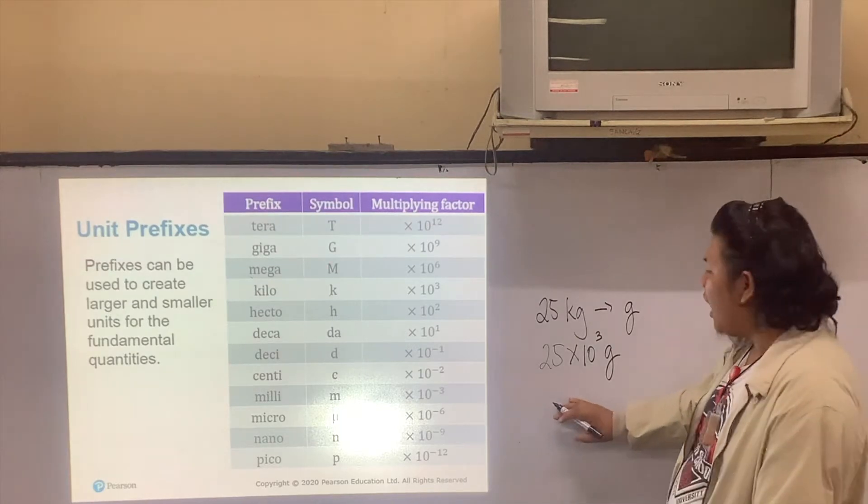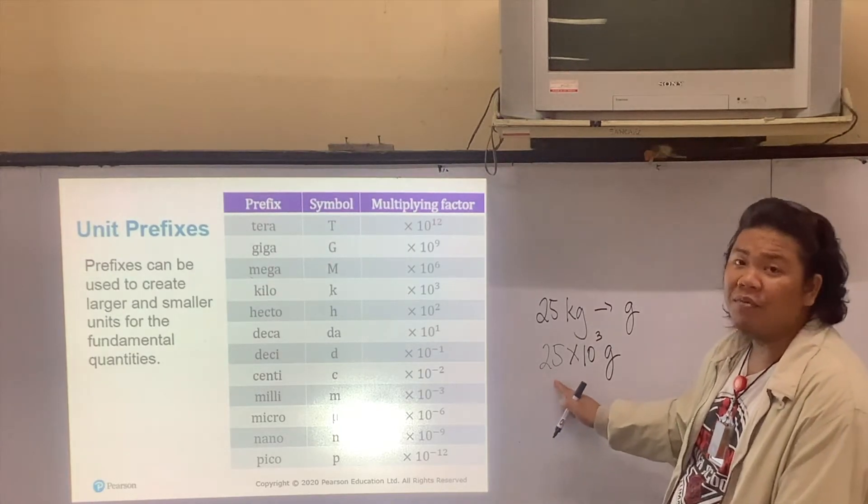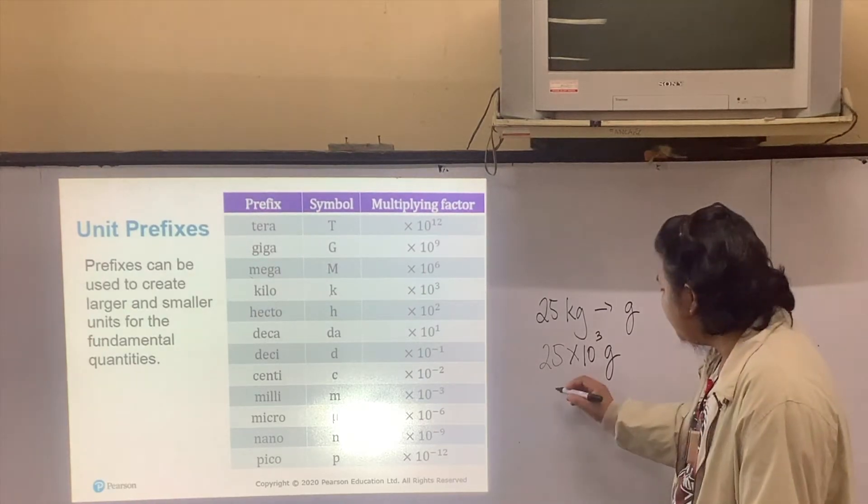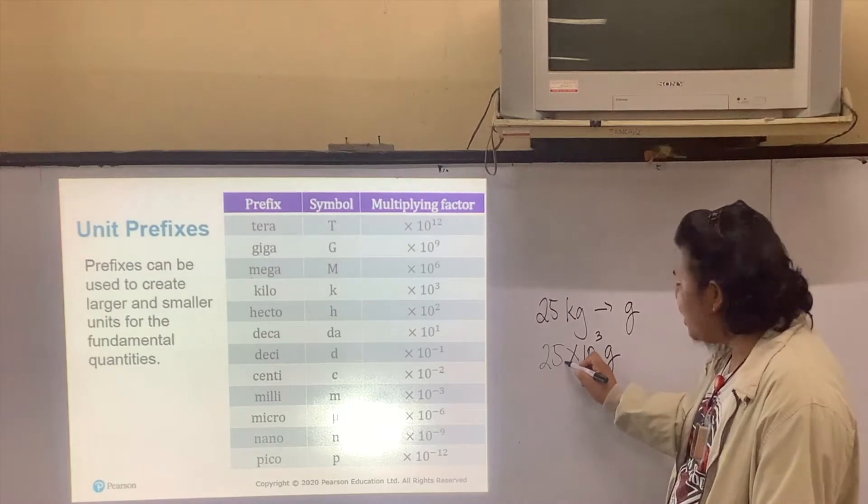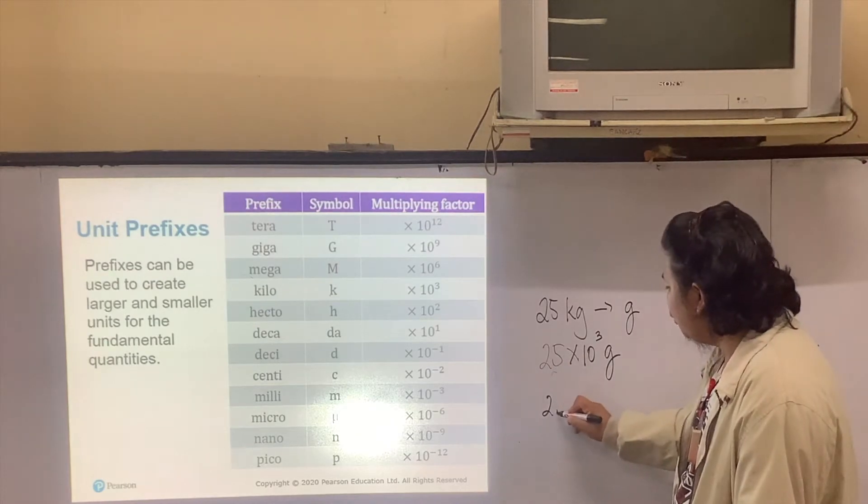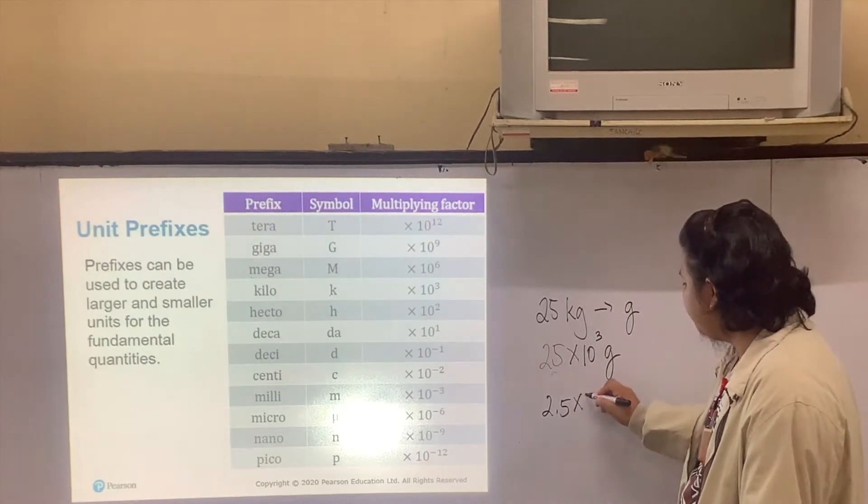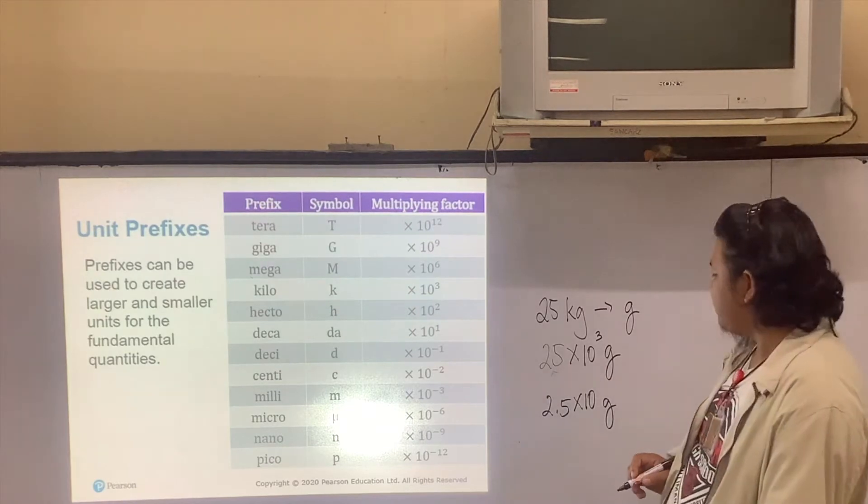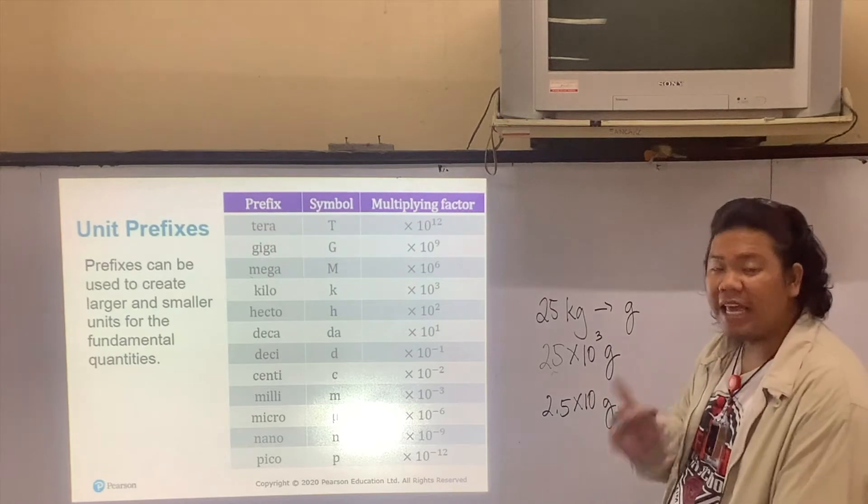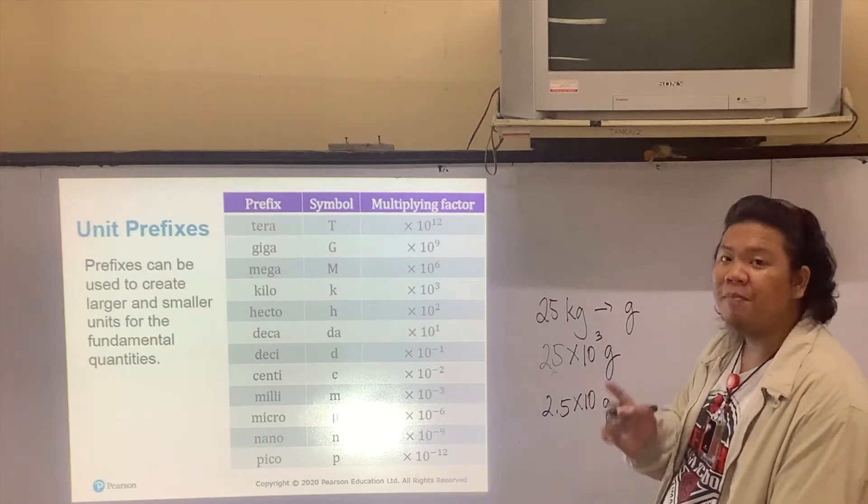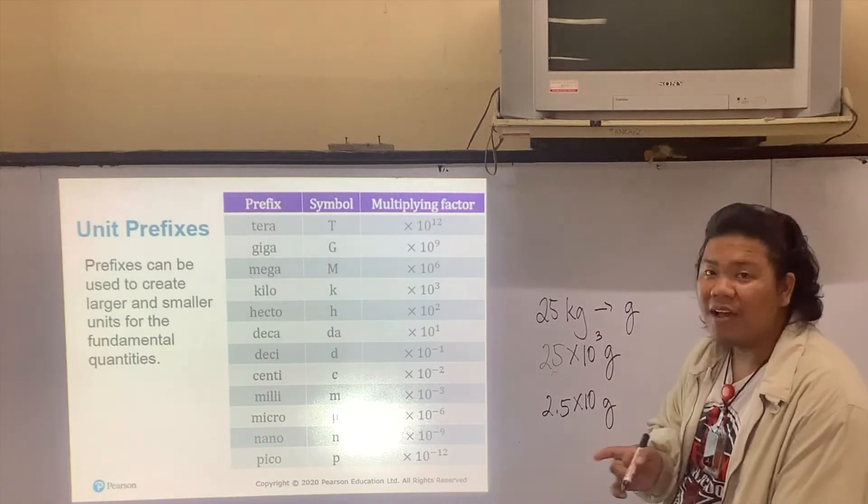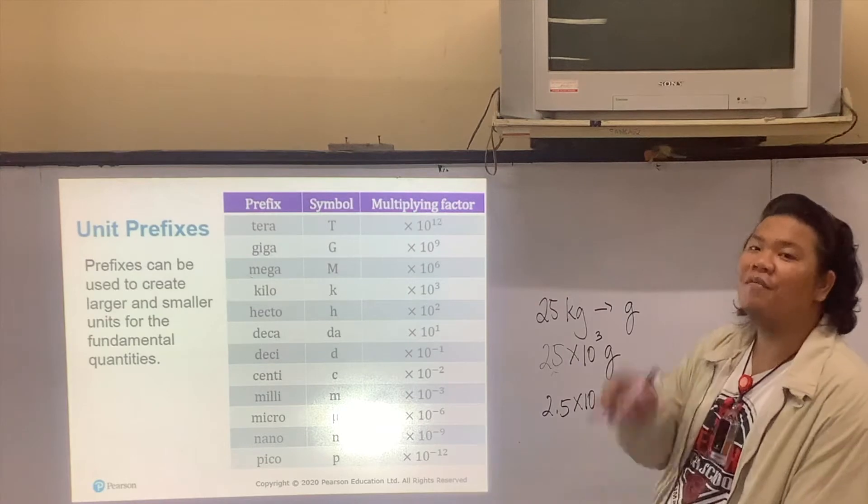It says that our base should not go beyond the value of 10. So to make this less than 10, we have to move one decimal place to the left. This will become 2.5 times 10 to the power of something grams. Since you moved one decimal place to the left, and as Muncheska said, when you move to the left, you have to add.